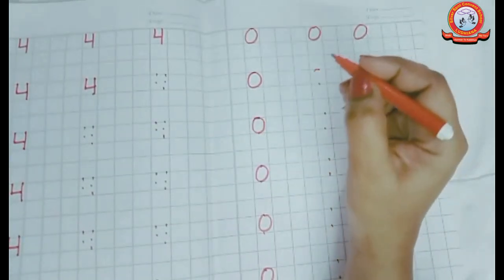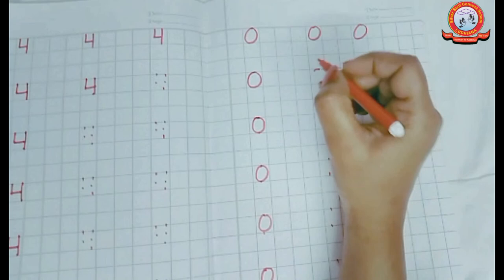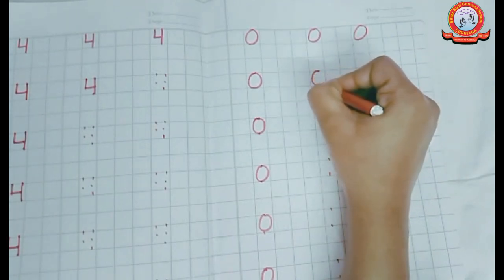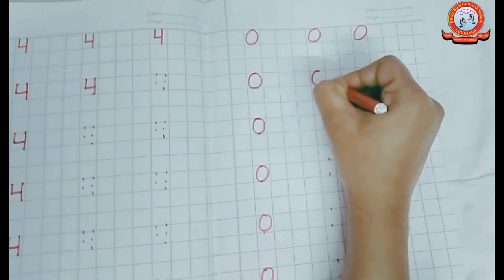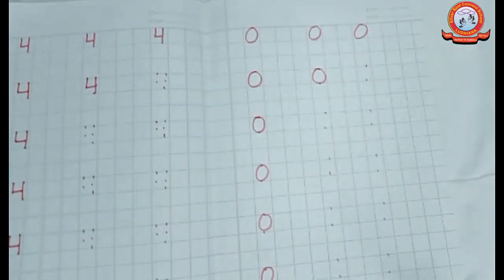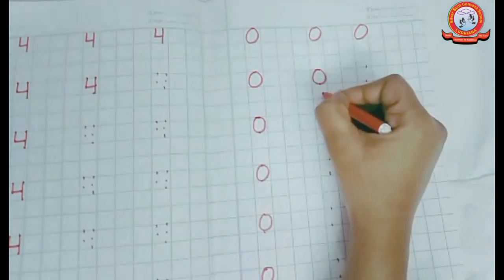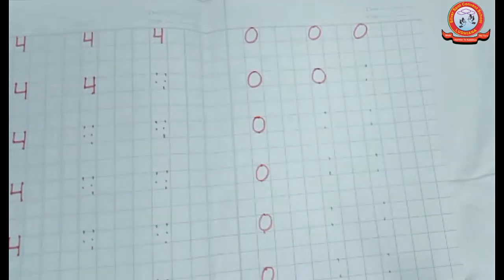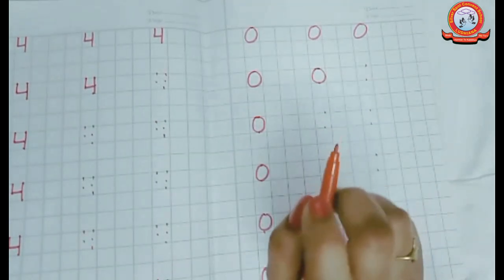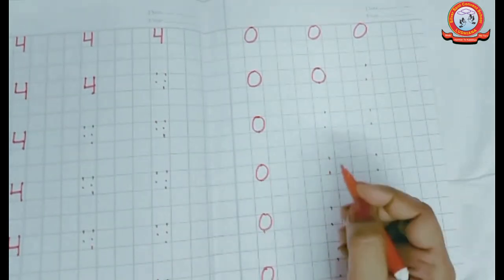Then you will hold your pencil well. You will keep it like this. You will touch the dots — touch and touch the dots. Your number 0 will not go out of the dots, and also not go out of lines. This is the box. We have to write it in the box.